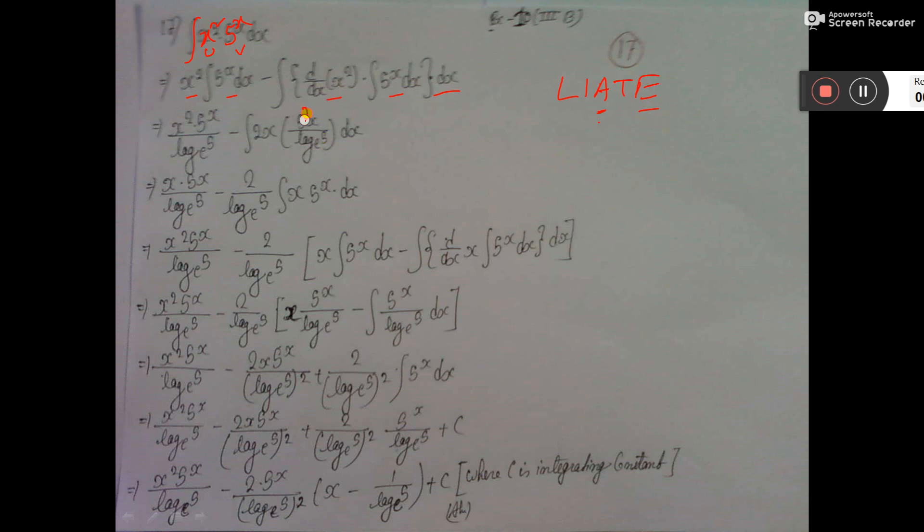This is 5 to the power x not 5x. Then, 2 by log 5 base e will come out. Again, u into v dx integration apply.